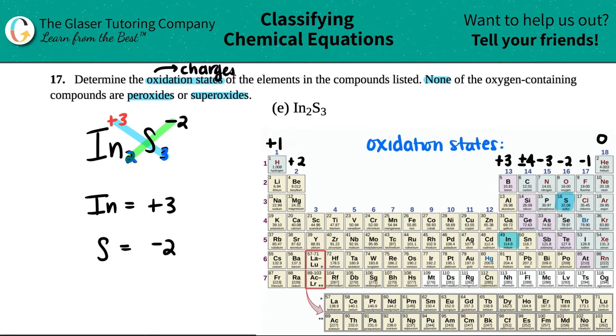We did it! Indium was a plus three charge when it made this compound, that means each indium lost three electrons. Then each sulfur gained two electrons when this compound was made, and that's it.